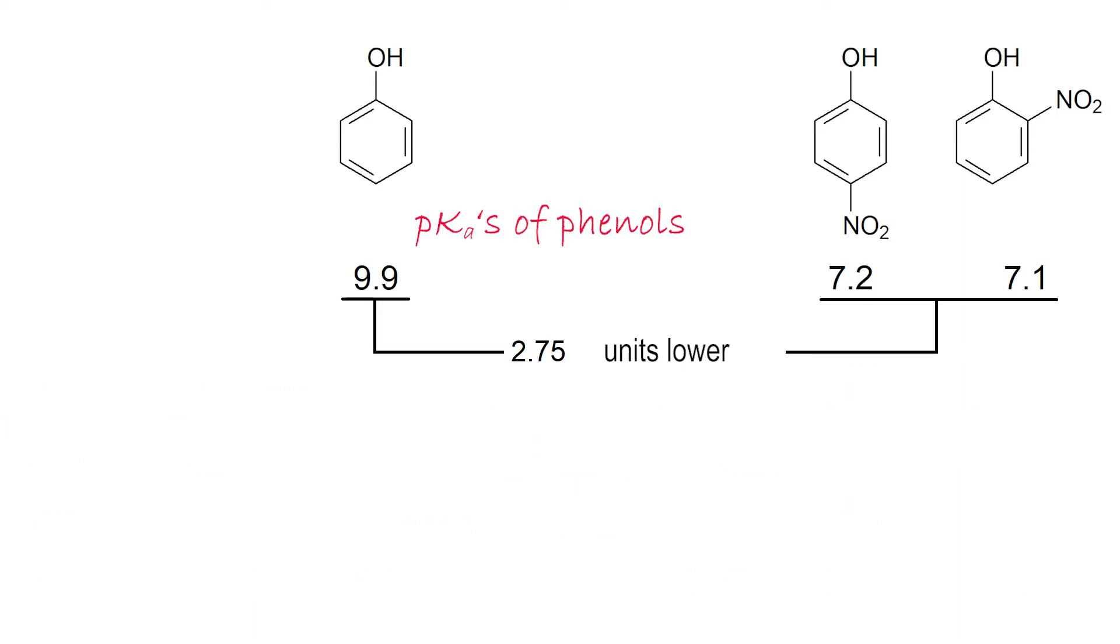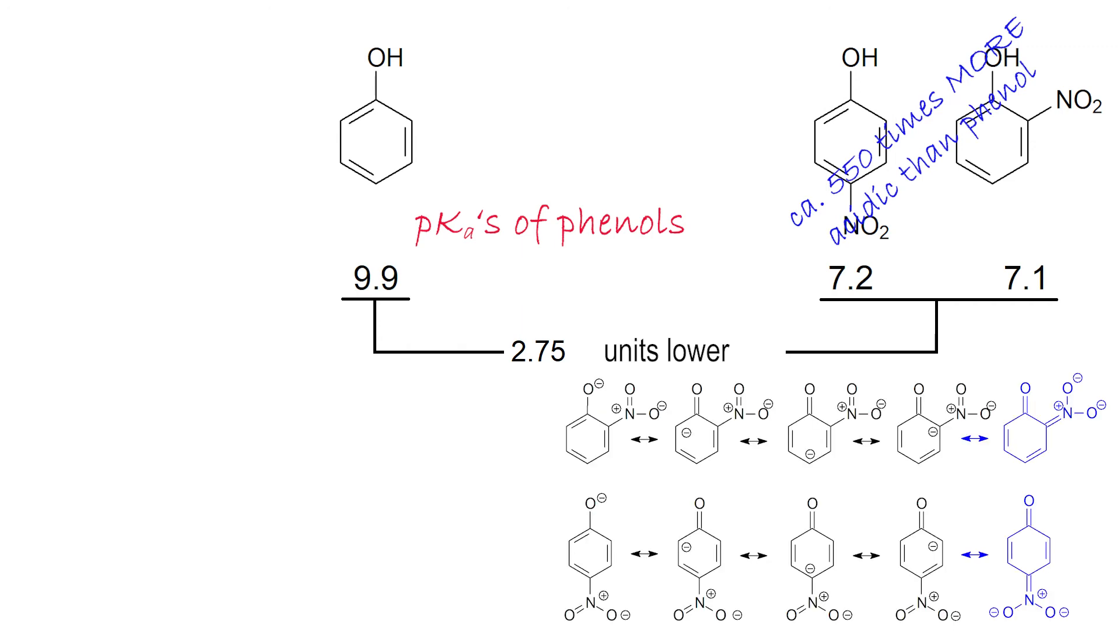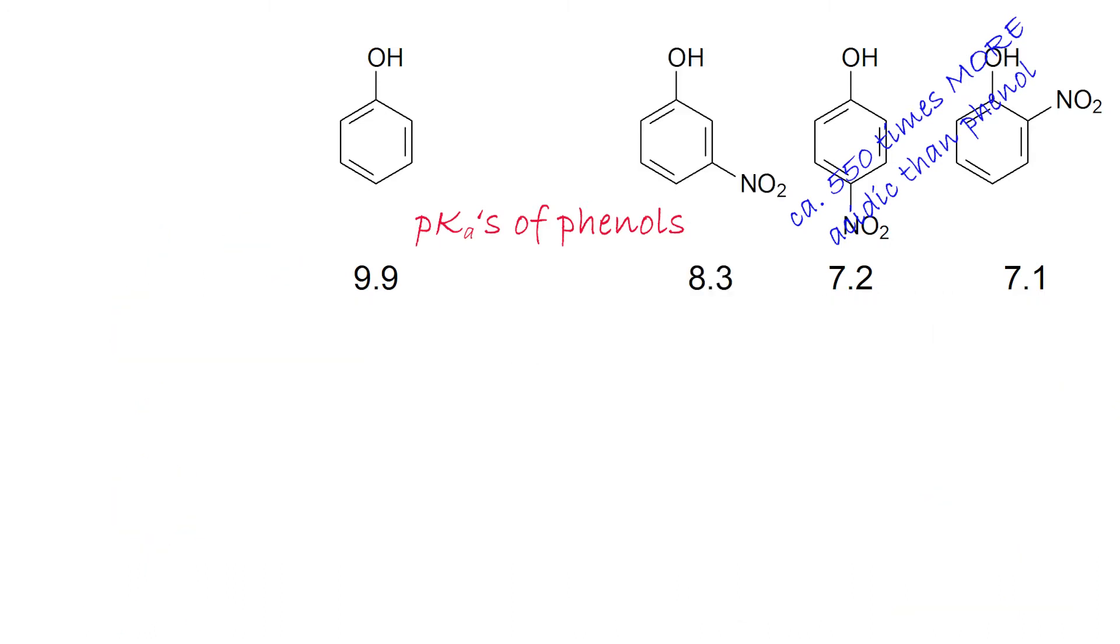For example, the nitro group in ortho and para diminishes in 2.75 units as an average the pKa values as compared to phenol. In other words, ortho and para nitro phenol are approximately 550 times more acidic than phenol. The nitro group in ortho and para delocalizes phenolate's negative charge by directly interacting with it in one of their resonance forms, what allows one to write additional ones. And let us explain the higher stability of the ortho and para nitro phenolates as compared to unsubstituted phenol.